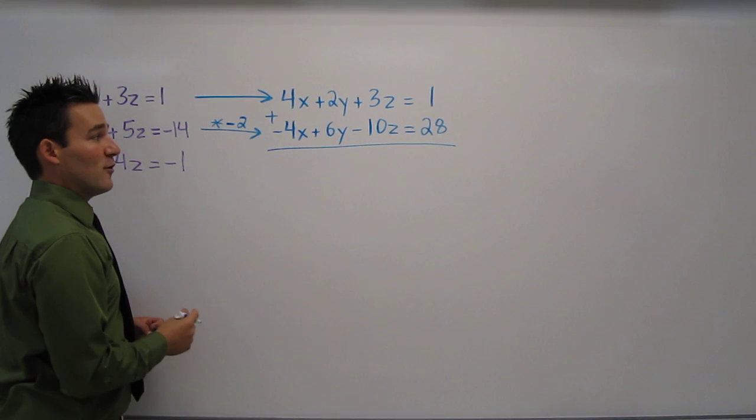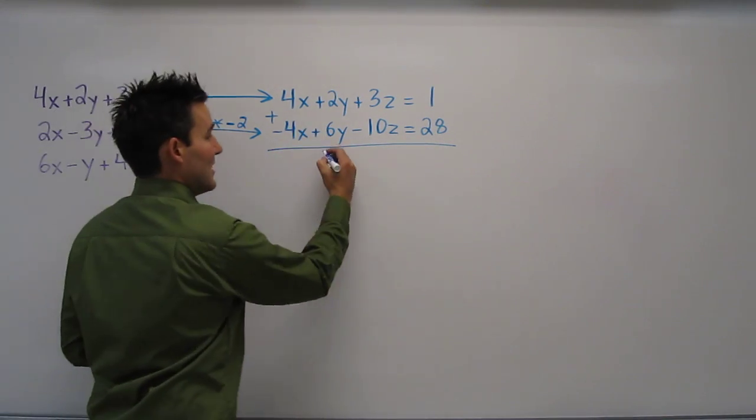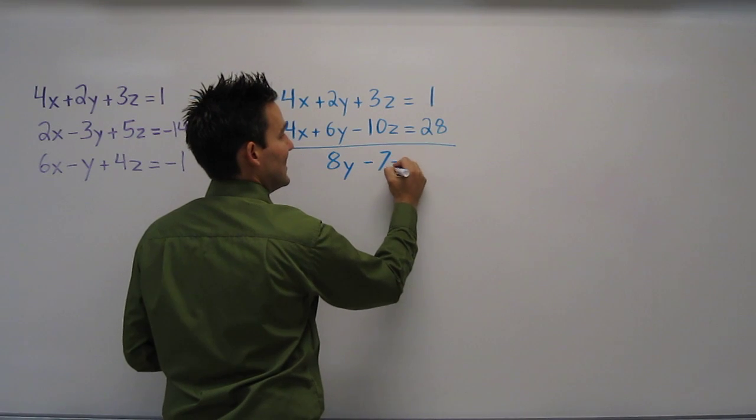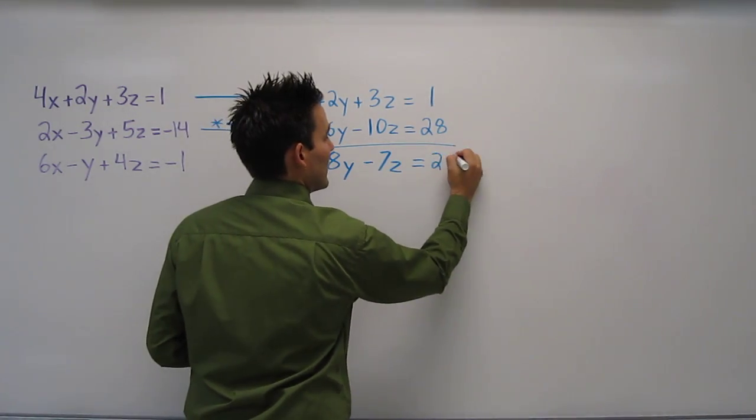4x plus negative 4x is 0x. Then we're left with 8y minus 7z equals 29.